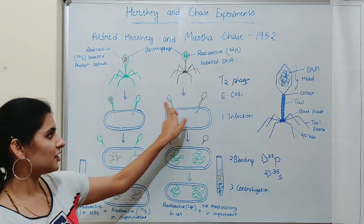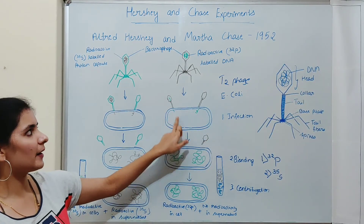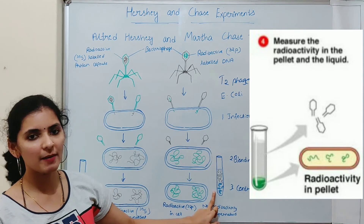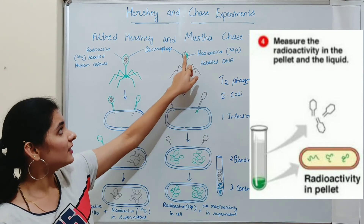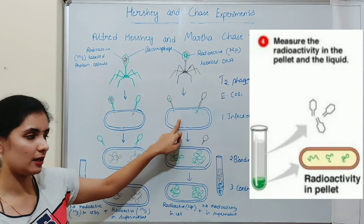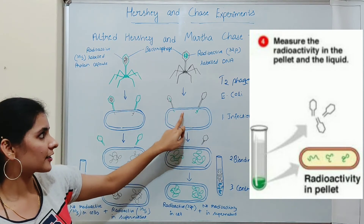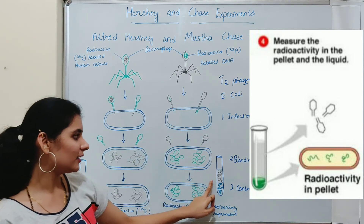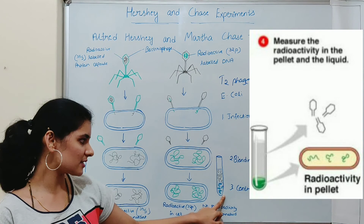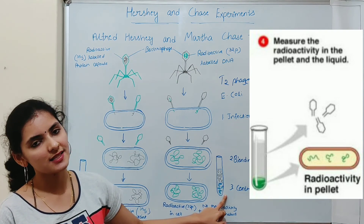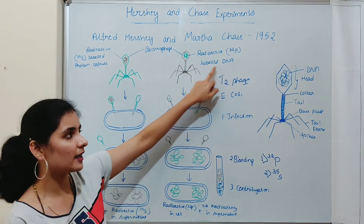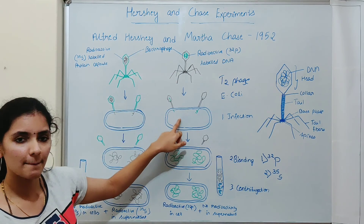In the second set of experiments, where bacterial cells were infected by virus having radioactive labeled DNA, the bacterial cells showed radioactivity. This suggests that the radioactive labeled DNA of the virus was transferred to the bacterial cell. Because of that, the bacterial cell present in the precipitate showed radioactivity. From this one can conclude that DNA is the genetic material, because it is the radioactive labeled DNA that was transferred from virus to bacterial cell.